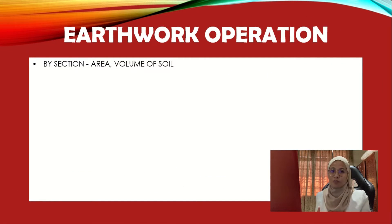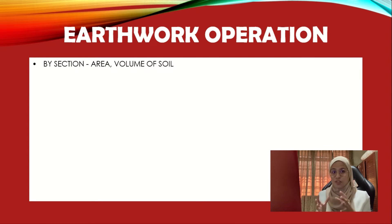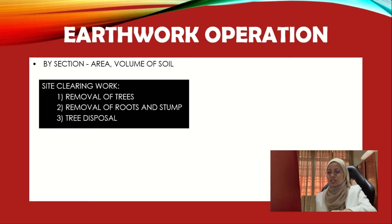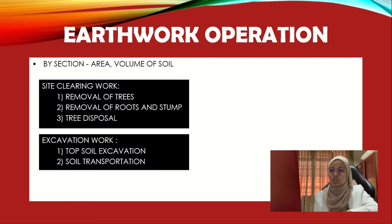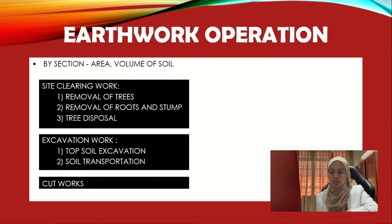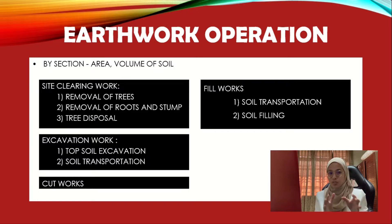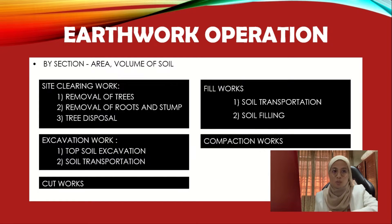For the earthwork operation, it is done by section because each section has different area and different volume of soil. There are five operations: first, site clearing work, which includes removal of trees, roots and stumps, and tree disposal. Second, excavation work, which includes topsoil excavation and soil transportation. Third, cut works. Fourth, fill works, which involves soil transportation and filling to the proposed site. Fifth and lastly, compaction works.